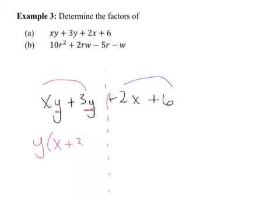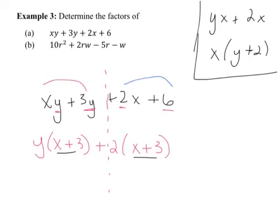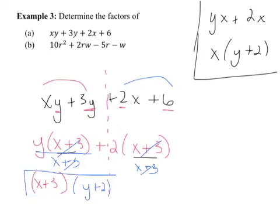On the right side, 2x plus 6 — the number 2 can come out of both terms, leaving x plus 3. Notice these are the same — that's the key to factor by grouping: you want the same factor left behind in both groups. Since x plus 3 is in both terms, we factor it out, leaving behind y plus 2. So the final solution is (x plus 3)(y plus 2).